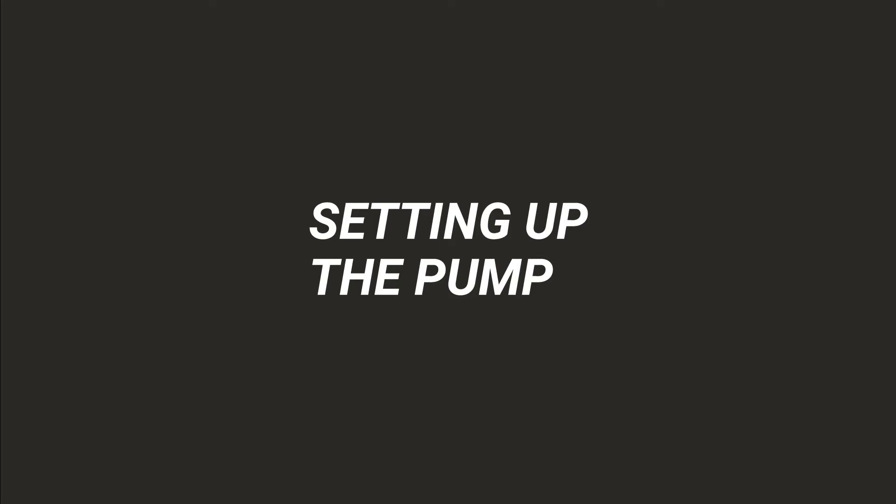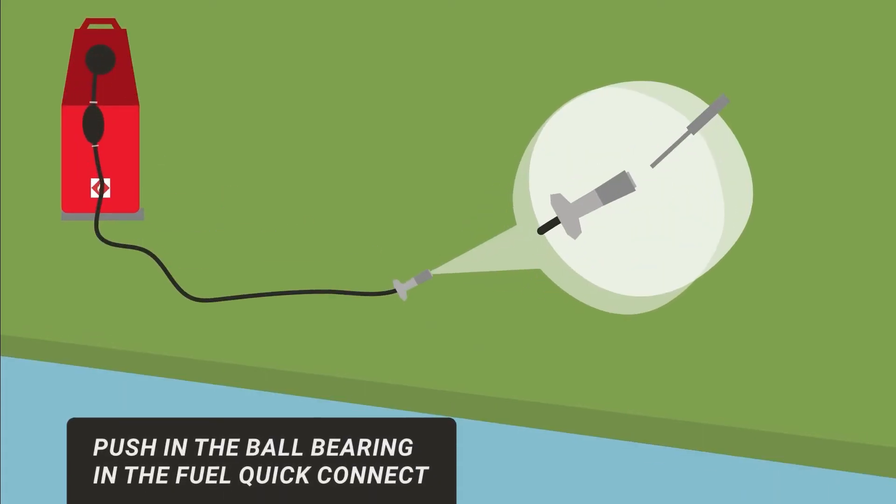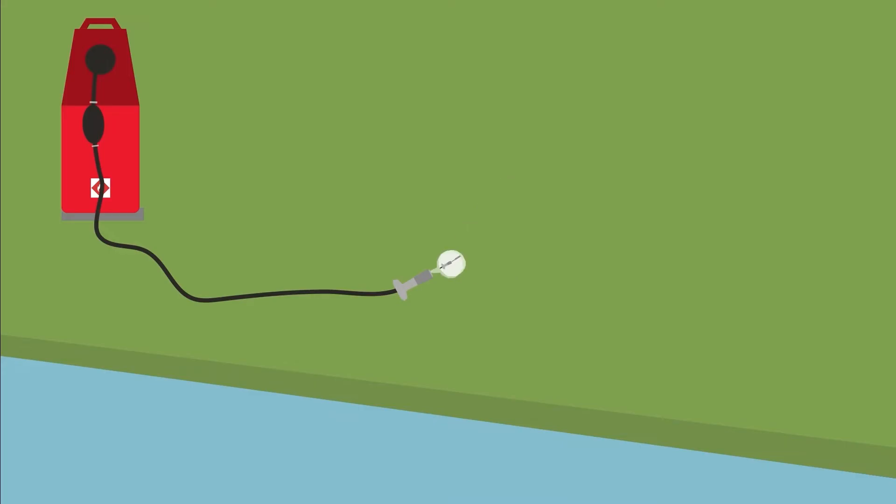Now that you have everything you need, you're ready to set up the pump. Using the spark plug wrench rod to push in the ball bearings in the FuelLine Quick Connect while squeezing the primer bulb will allow the air to be purged from the FuelLine.